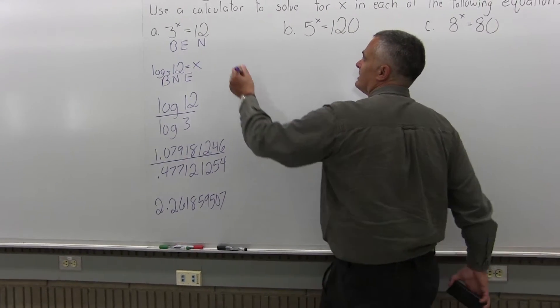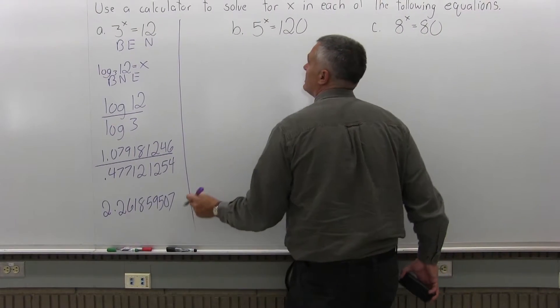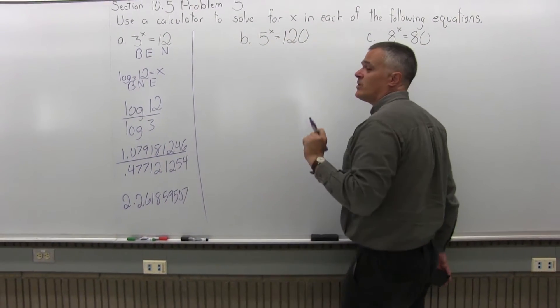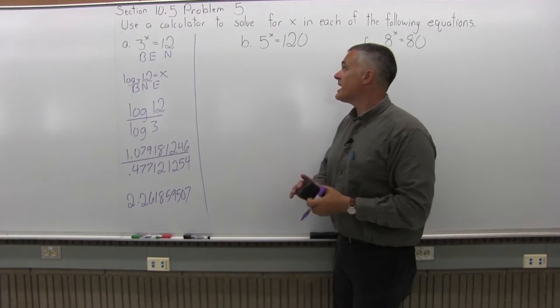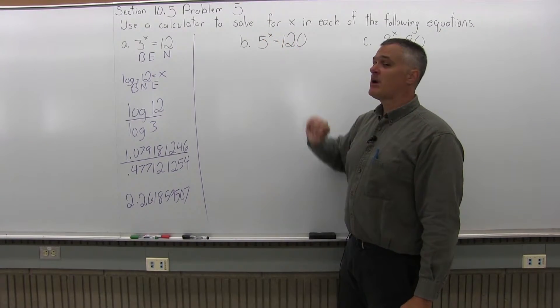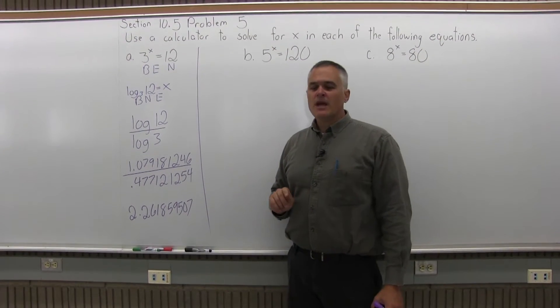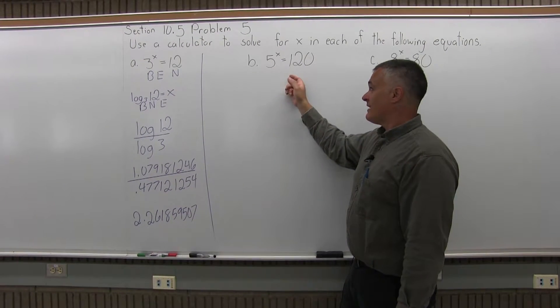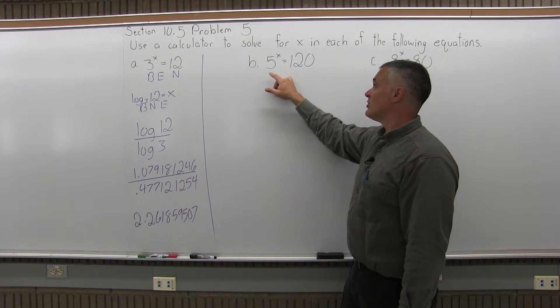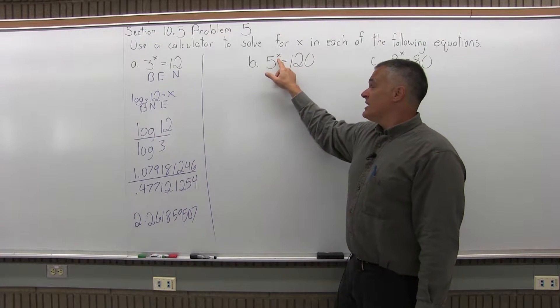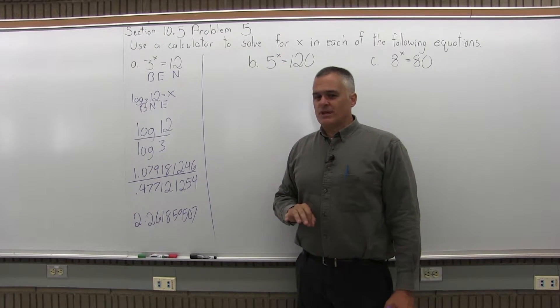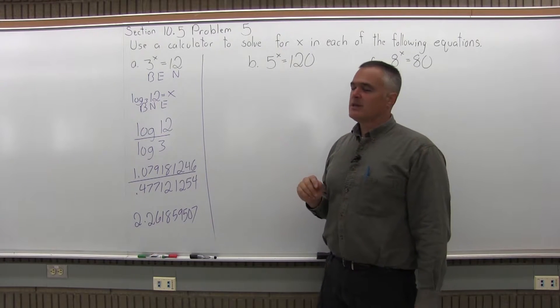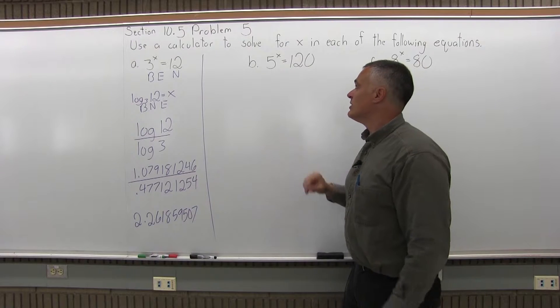Now part B is the same exact process. You have 5 to the x power equals 120. Solve for x. There is some exponent for the 5, where if you raise 5 to that power, it's 120. And again, I can estimate it pretty quickly. 5 to the first is 5. 5 to the second is 25. 5 to the third is 125. So the x is going to be almost 3, probably 2.9 something. But to get an exact answer, it's going to be tougher. So we're going to use logs.